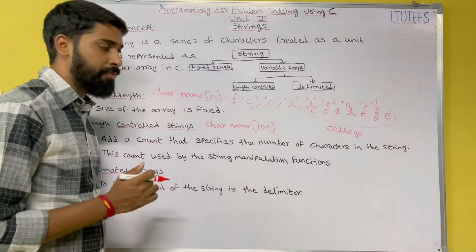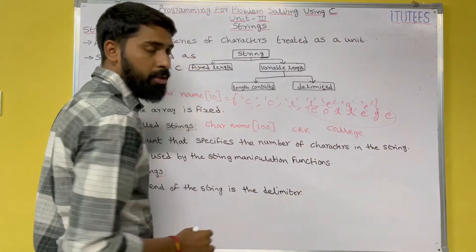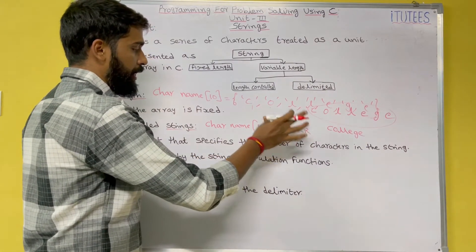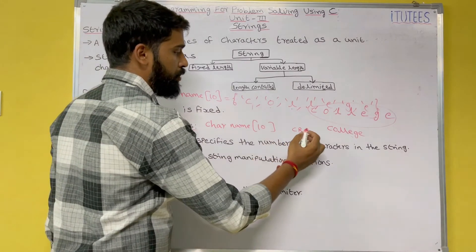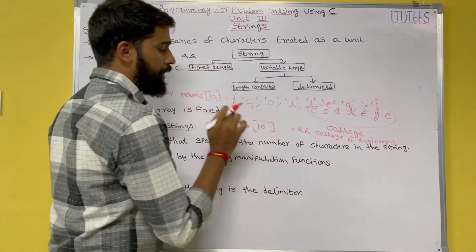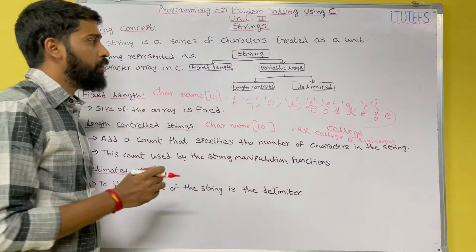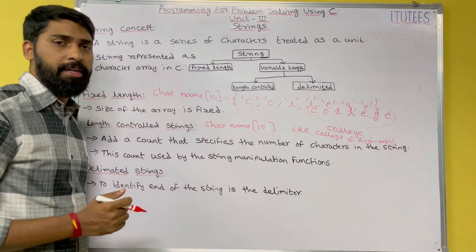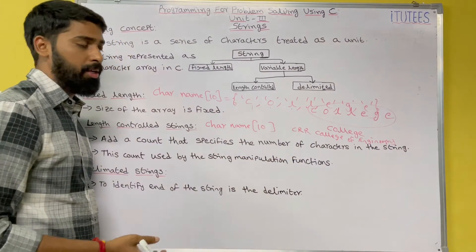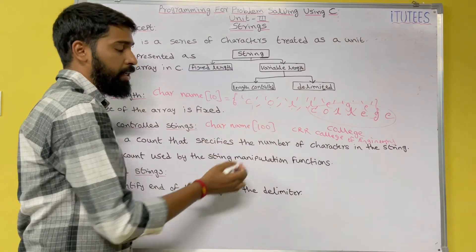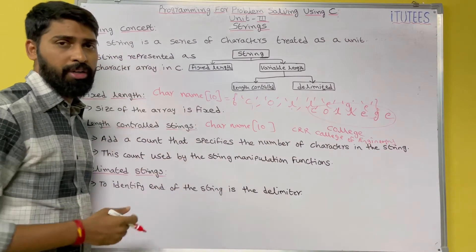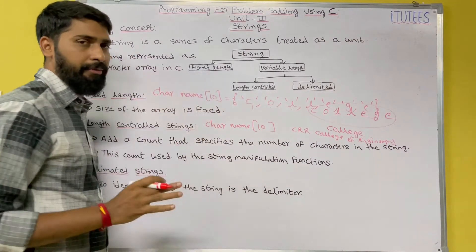The disadvantage of fixed-length strings: if I enter only 'CRL' (three letters), I still assign 100 bytes of memory. On the other hand, if I define char name[10] and try to store 'CRL College of Engineering', the array is too small. So with fixed-length arrays you face disadvantages — either you waste memory locations or you lose data.